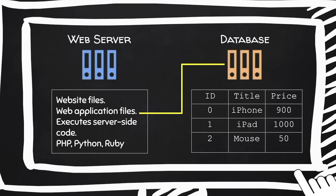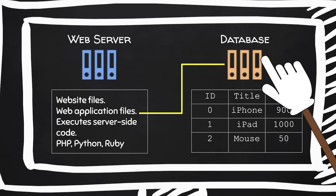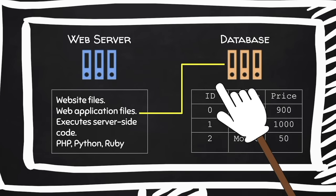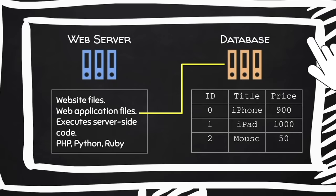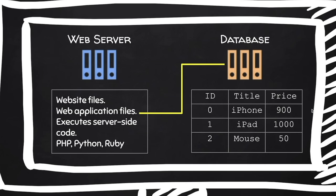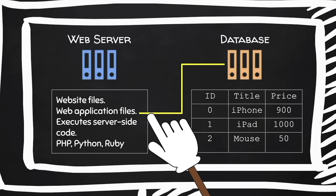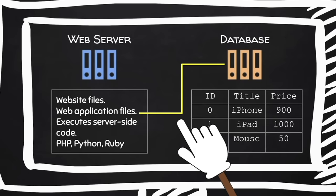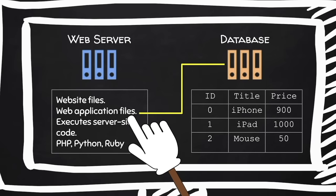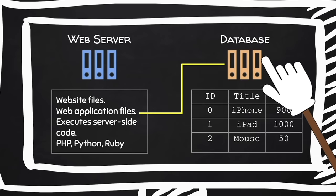The database contains a number of tables — for example, a table for users containing usernames and passwords. When users log in, the web application communicates with the database to check if the user exists and if the username and password match. The web application just communicates with the database, gets information, and displays it or does something useful with it. But the data itself is not stored on the web server — it's stored in the database.